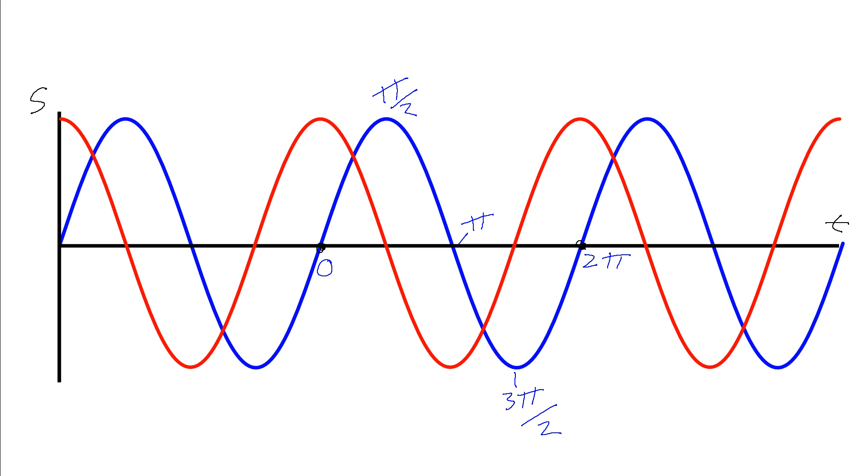Now we can do the same thing on the red wave. We can label up equivalent points on the red wave. So the equivalent 0 point on the red wave would be here. We'd have the π/2 here. Here's π. Here's 3π/2. And here's the 2π back to the start of the next cycle.